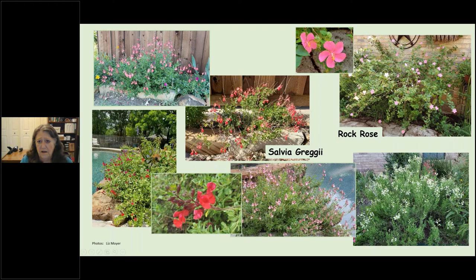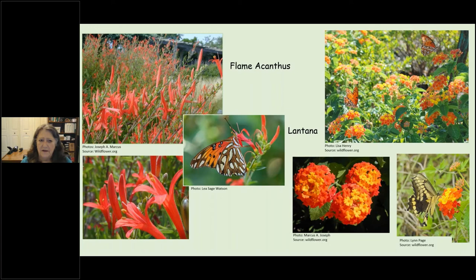Rock rose (Pavonia) is a member of the hibiscus family with blooms about the size of a silver dollar — a really cute plant that pollinators flock to. Flame acanthus used to be hard to find but is now common in the nursery trade; it's gorgeous and doesn't start blooming until July, so it feeds pollinators from July through the freeze, which is great for that succession of blooms. Lantana also starts in late June or July and blooms through the freeze.